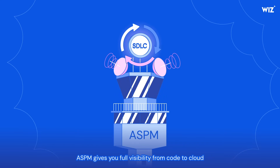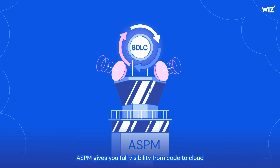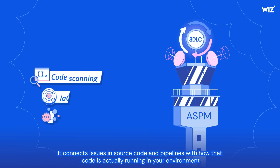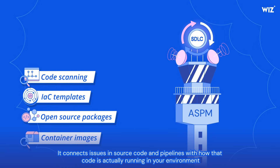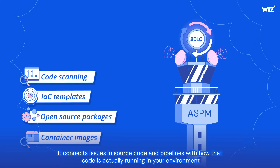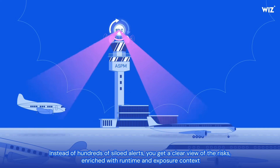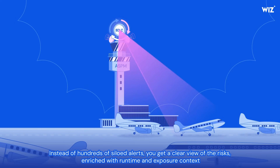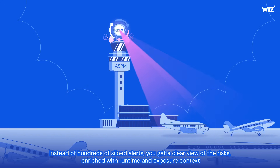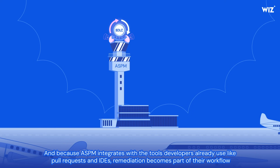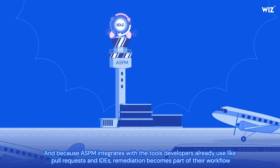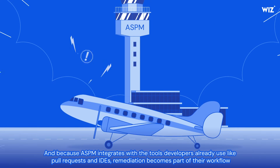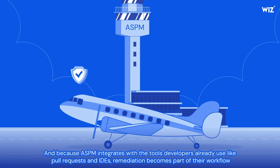ASPM gives you full visibility from code to cloud. It connects issues in source code and pipeline with how that code is actually running in your environment. Instead of hundreds of siloed alerts, you get a clear view of the risks enriched with runtime and exposure context. And because ASPM integrates with the tools developers already use, like pull requests and IDEs, remediation becomes part of their workflow.